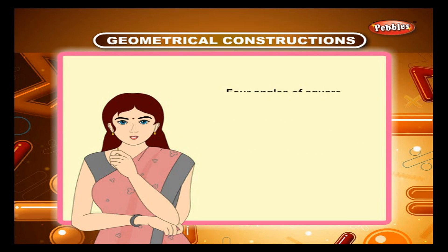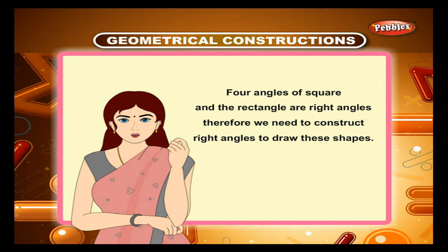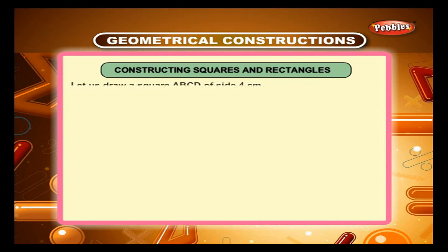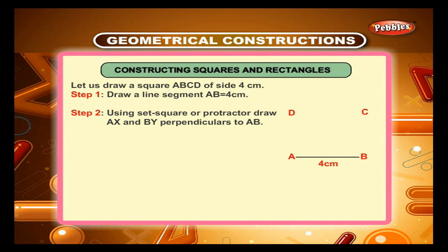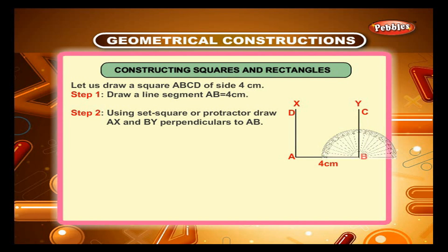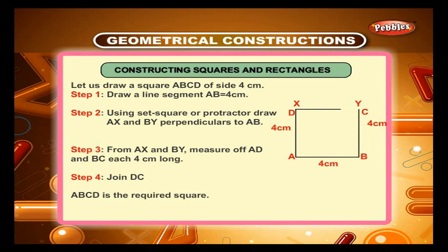You know that all 4 angles of a square and a rectangle are right angles. Therefore, we need to construct right angles to draw these shapes. Sum 1: Let us draw a square ABCD of side 4 cm. Step 1: Draw a line segment AB equal to 4 cm. Step 2: Using a set square or protractor, draw AX and BY perpendicular to AB. Step 3: From AX and BY, measure AD and BC each 4 cm long. Step 4: Join DC. ABCD is the required square.